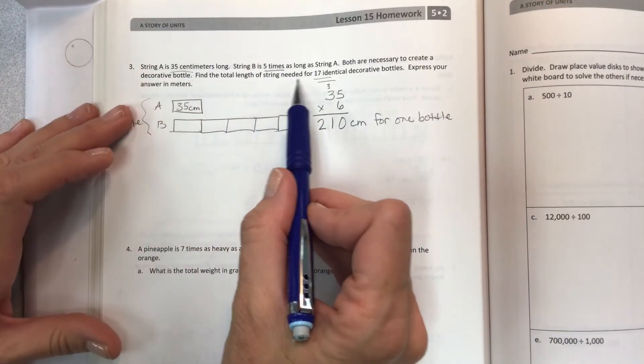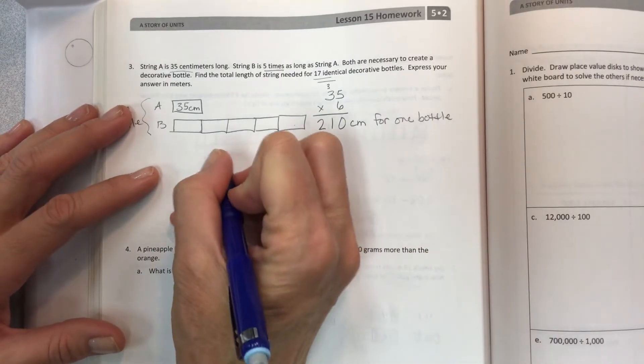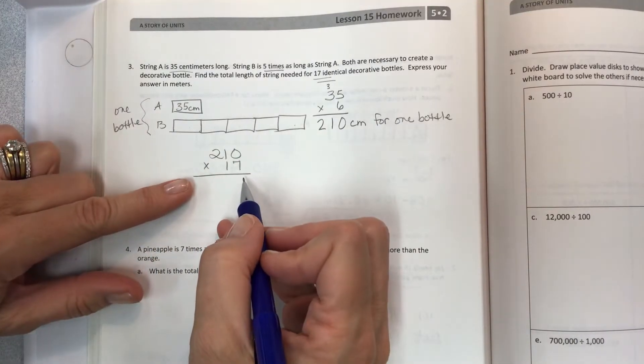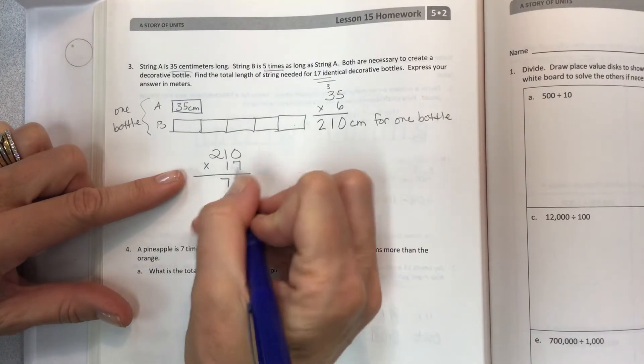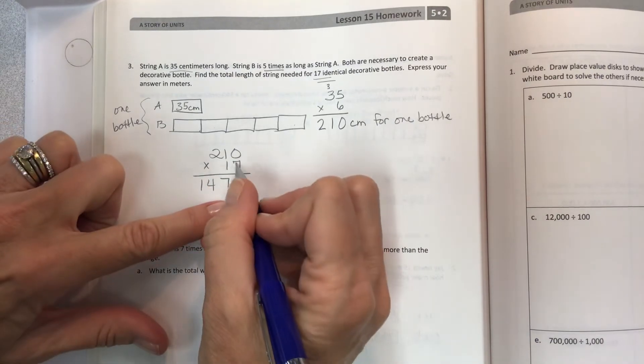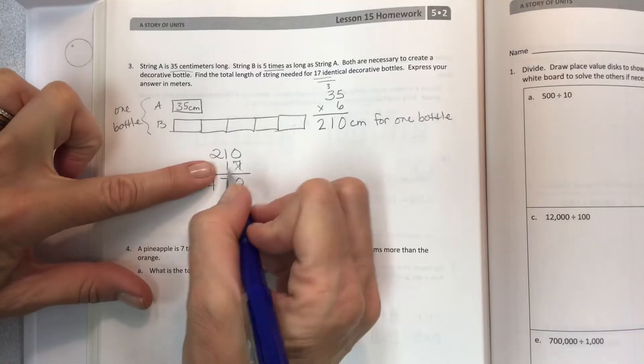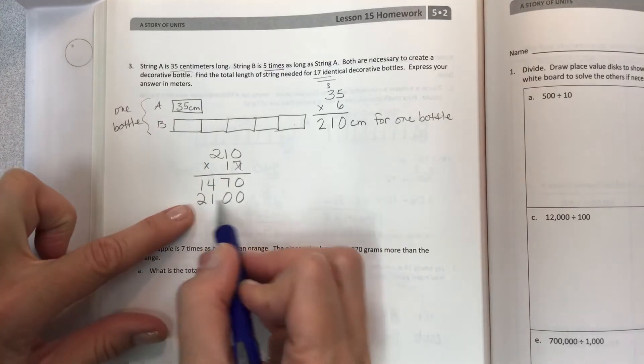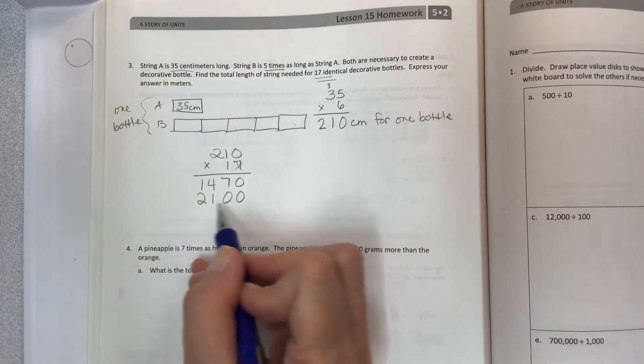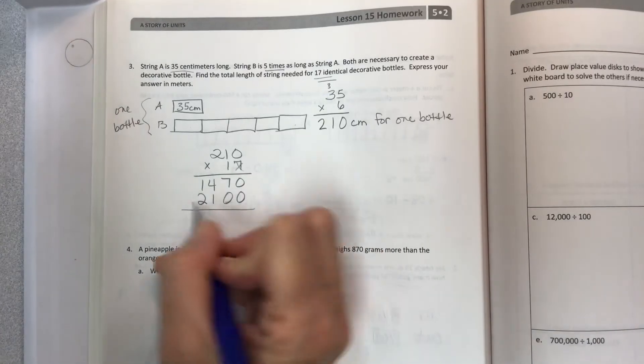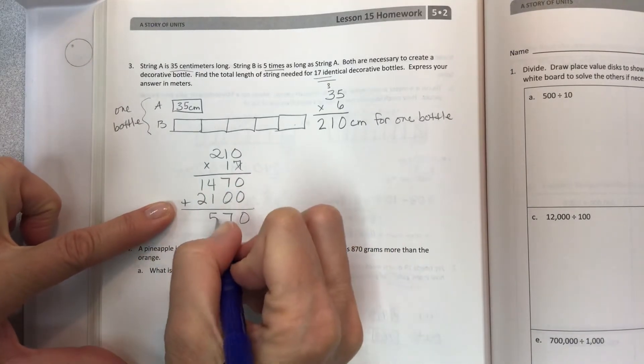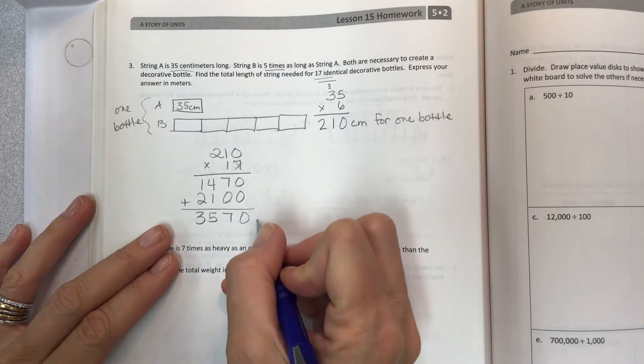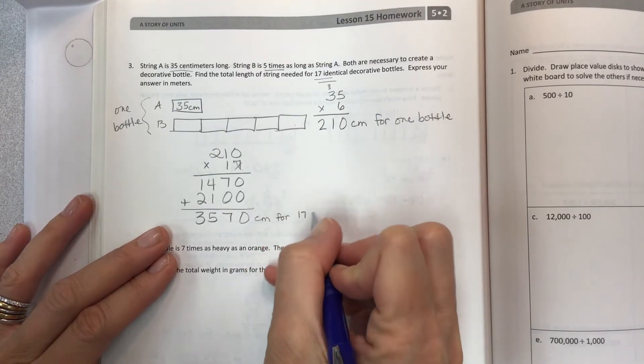Then, that's not the final question. It says find the total length of string needed for 17 bottles. So we'll take our 210 and multiply it by 17. Use the standard algorithm. 7 times 0 is 0. 7 times 1 is 7. 7 times 2 is 14. Hold this spot with the 0 because we're done with the 1s. Move to the 10s place. 1 times 0 is 0. 1 times 1 is 1. 1 times 2 is 2. And that makes sense because 1 times 210 should be 210. But it's actually 10 times 210. So we need the 2100. Add these up. 0, 7, 5, and 3.